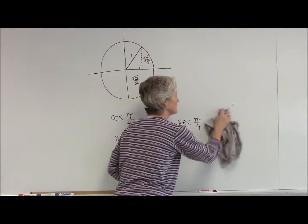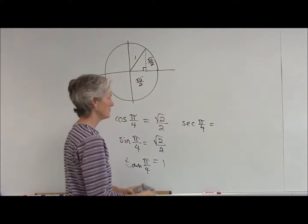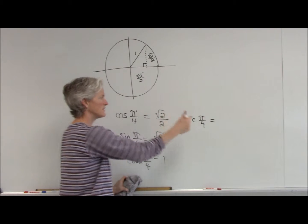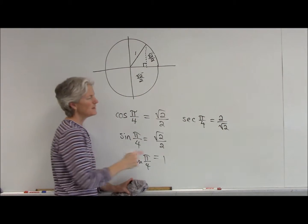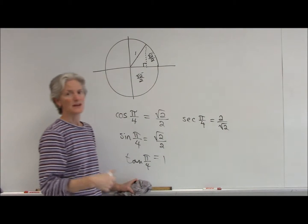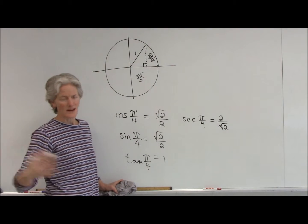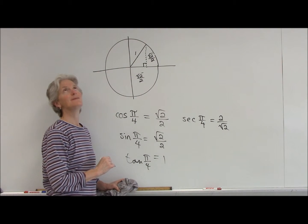Reciprocal means you're flipping it. So, flipping this guy is 2 over the square root of 2. You're done. I mean, if you wanted to rationalize that denominator, you could. Usually, in calculus, we don't have to worry about such trivial matters.